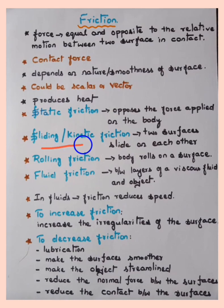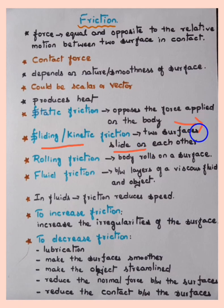Sliding or kinetic friction: when two surfaces slide on each other, sliding or kinetic friction exists. It means the object has started moving — it is in motion — and there exists a force opposite to the direction of motion of the object. That is sliding or kinetic friction.